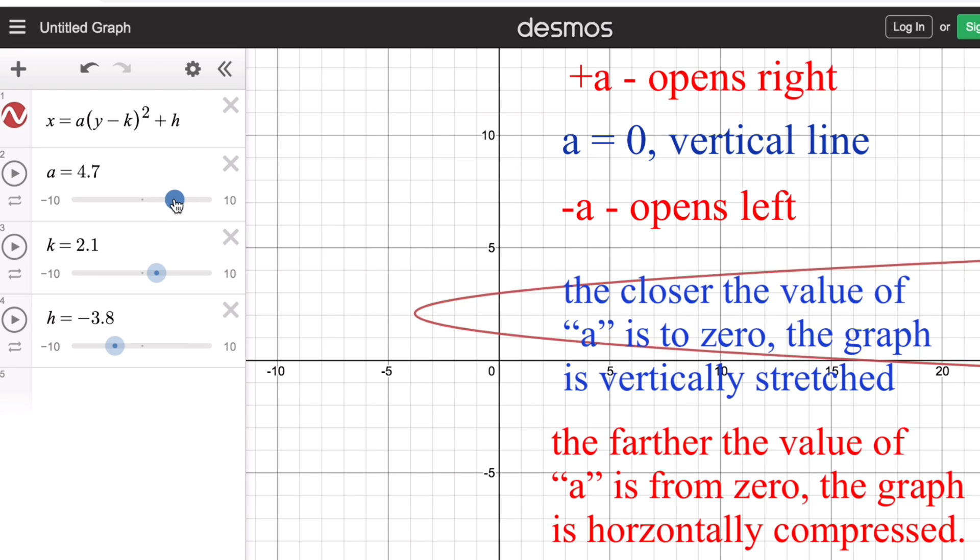This is also the same thing if we go the other side. So if we start from zero, which is a vertical line, and we change the value of a away from zero towards negative 10, the graph becomes horizontally compressed, meaning it becomes more and more horizontal in shape.